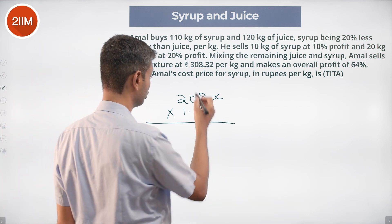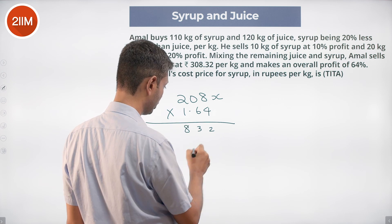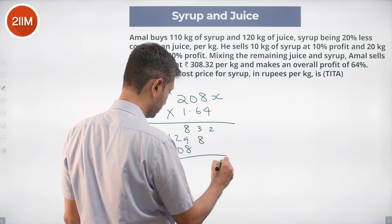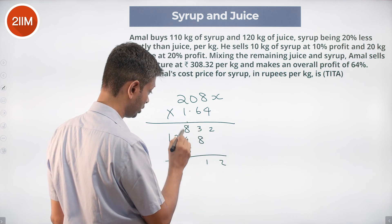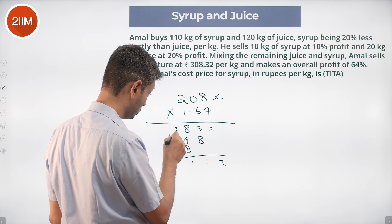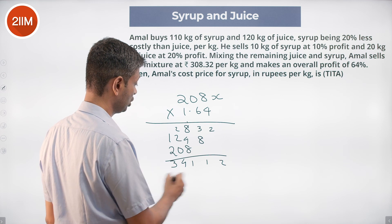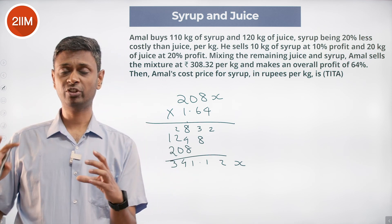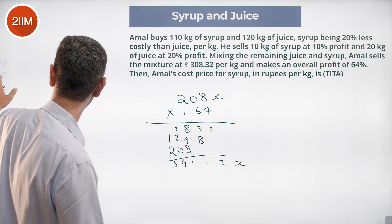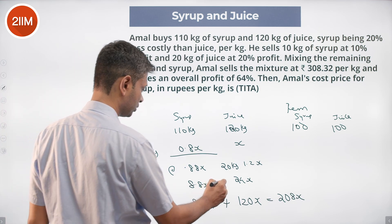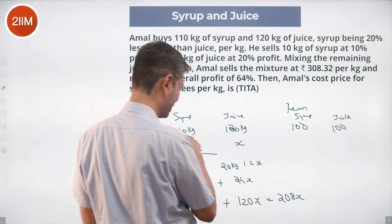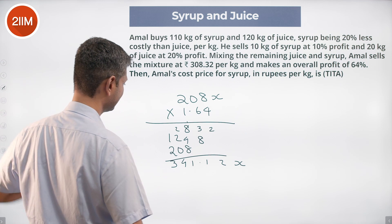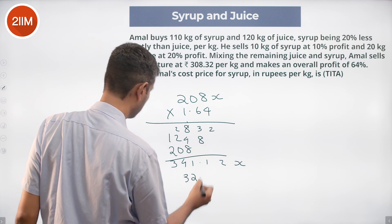Computing 208X into 1.64 by brute force: 208 times 1.64 gives 341.12X as the overall selling price. He already made 32.8X by selling the initial 10 kg and 20 kg. Subtracting 32.8X from 341.12X gives the remaining selling price.